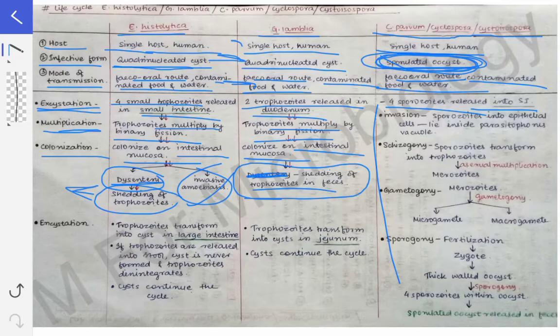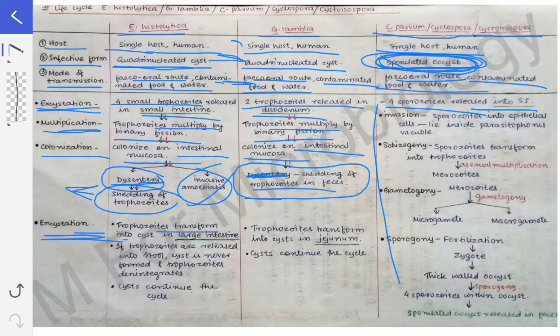Next we have encystation. Encystation means formation of the cyst wall so that the cyst can be released and passed in the stool. Encystation means the trophozoites transform into cysts. In the case of Entamoeba histolytica, this process occurs in the large intestine.